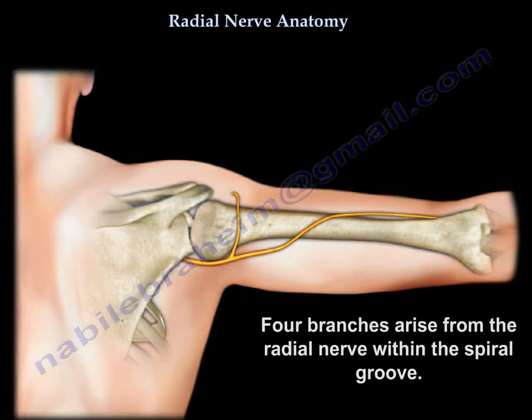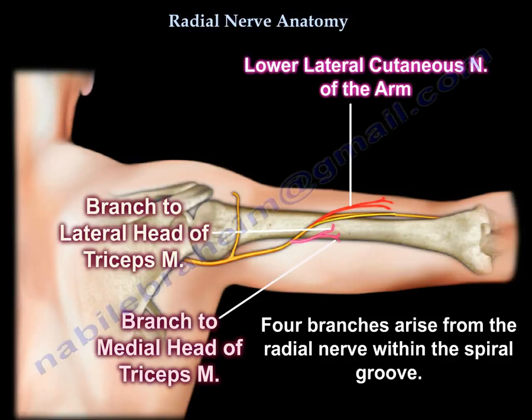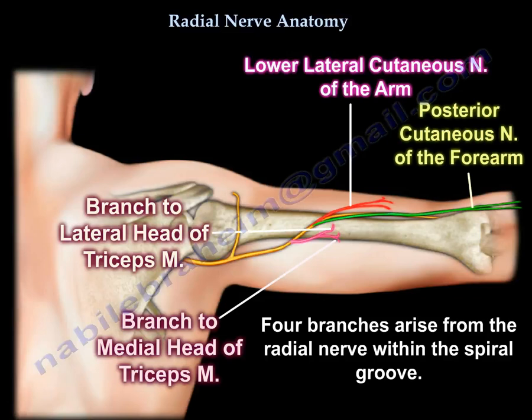Four branches arise from the radial nerve within the spiral groove: a branch to the lateral head of the triceps muscle, a branch to the medial head of the triceps muscle, the lower lateral cutaneous nerve of the arm, and the posterior cutaneous nerve of the forearm.